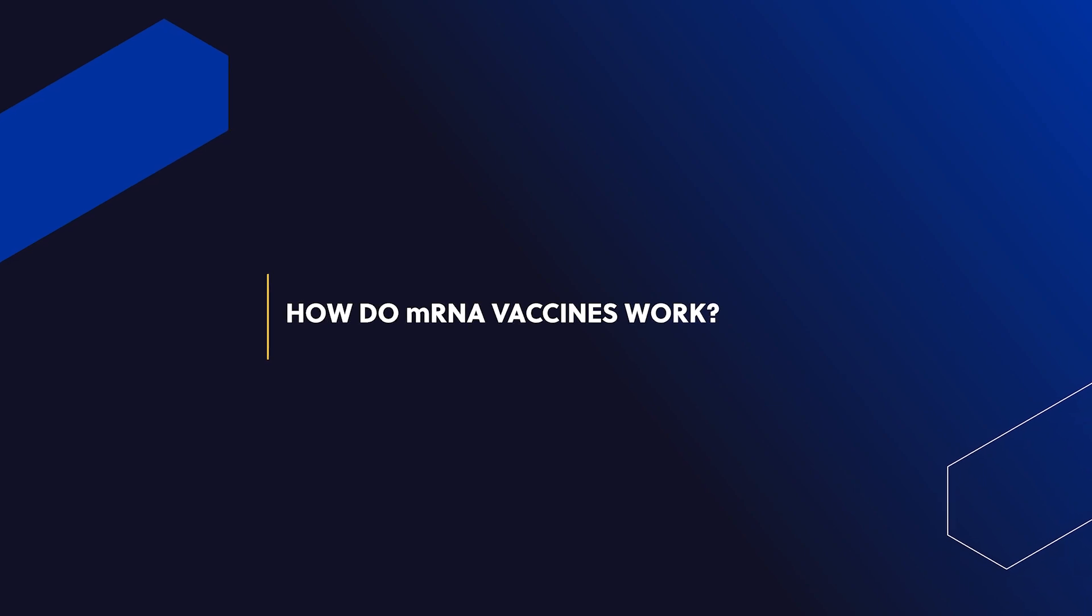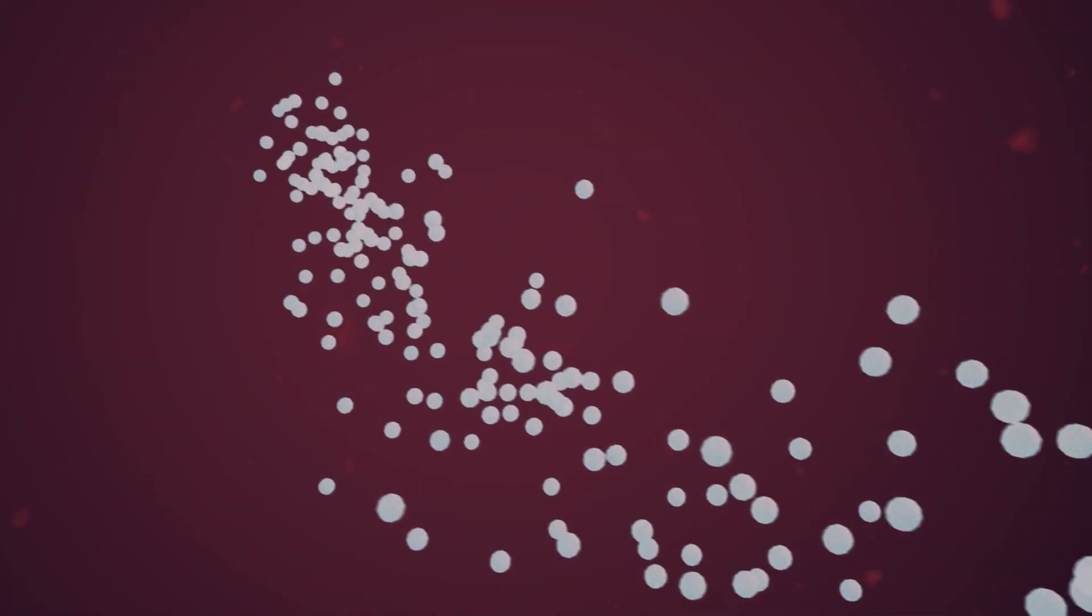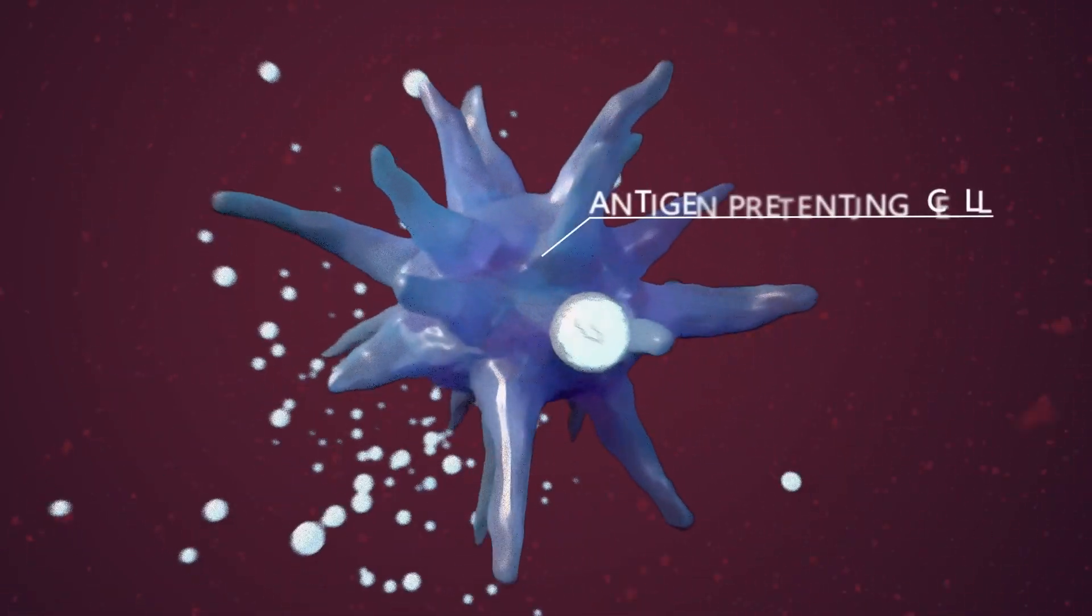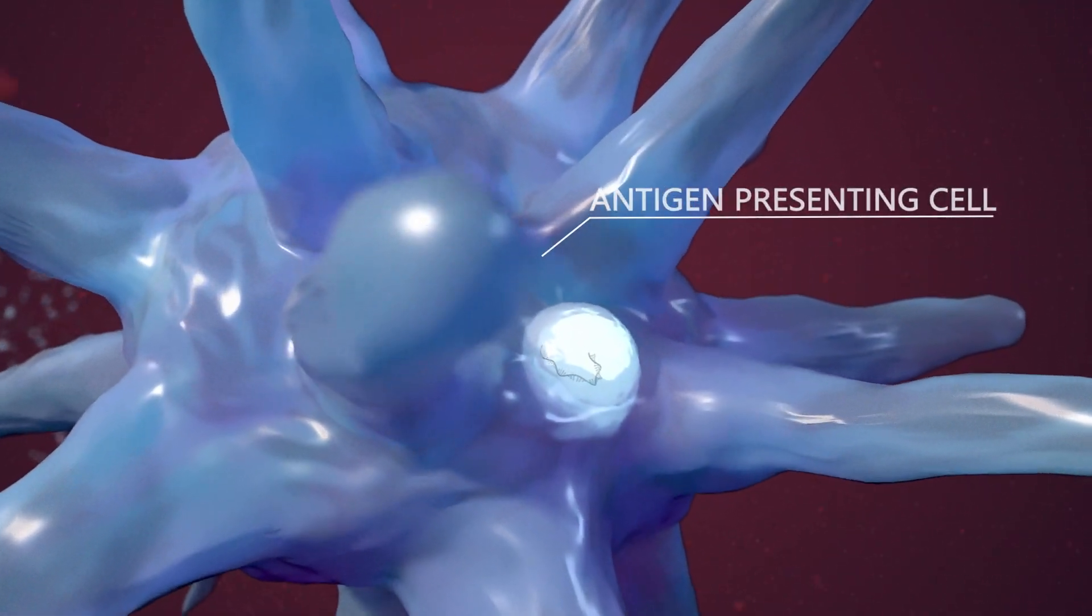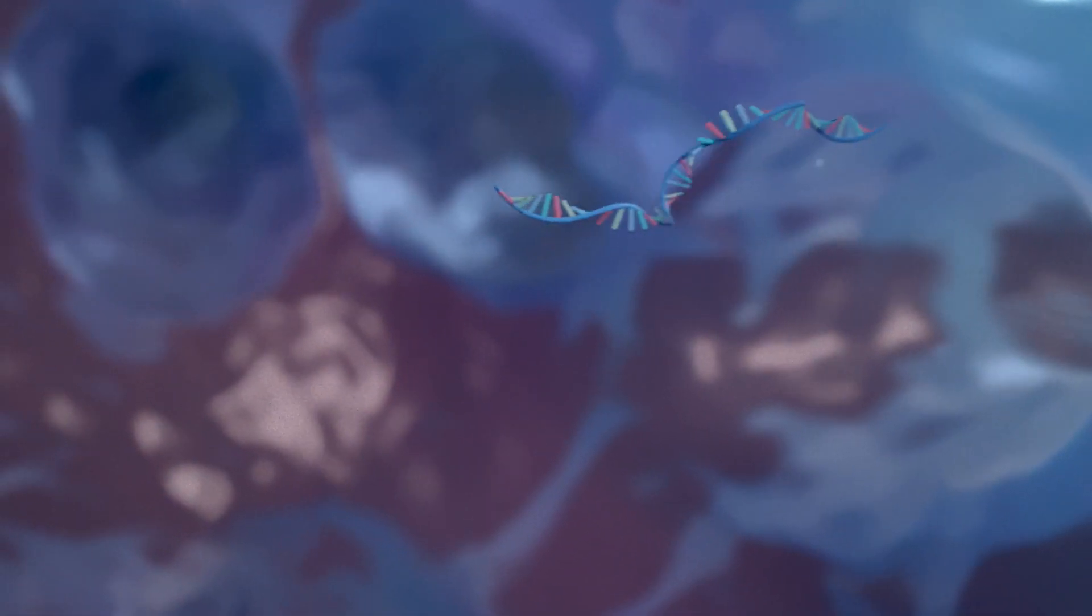When an mRNA vaccine is injected into a person's arm, tiny lipid vesicles containing the mRNA molecules travel through the body's fluids and merge with a special type of immune cells called antigen-presenting cells, or APCs.